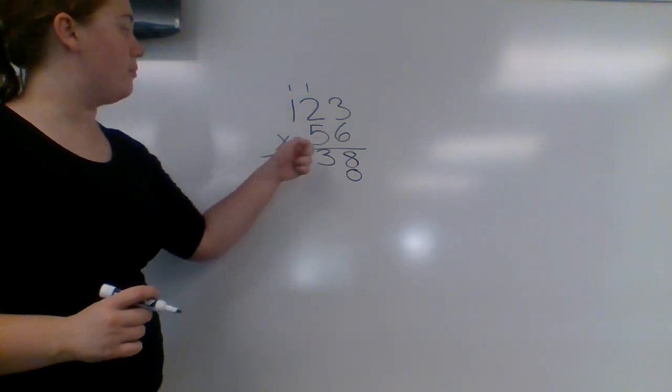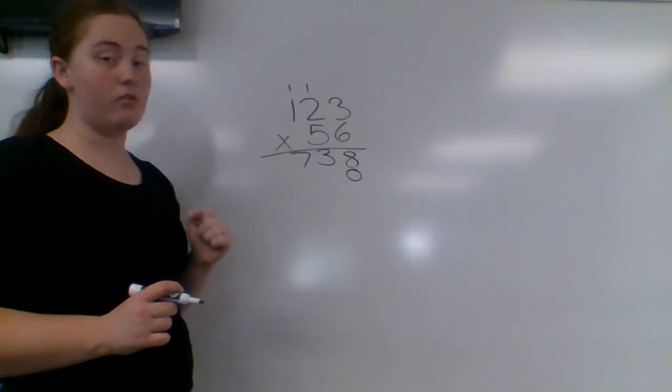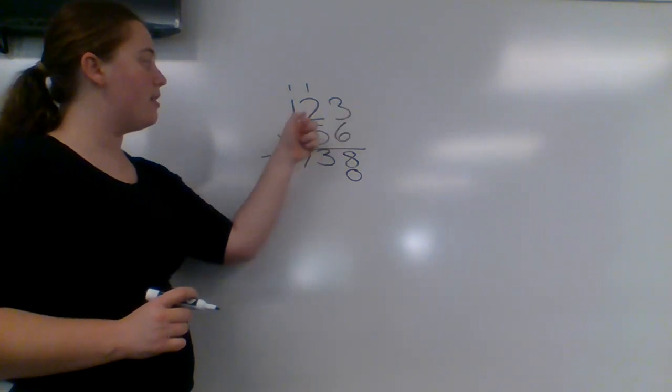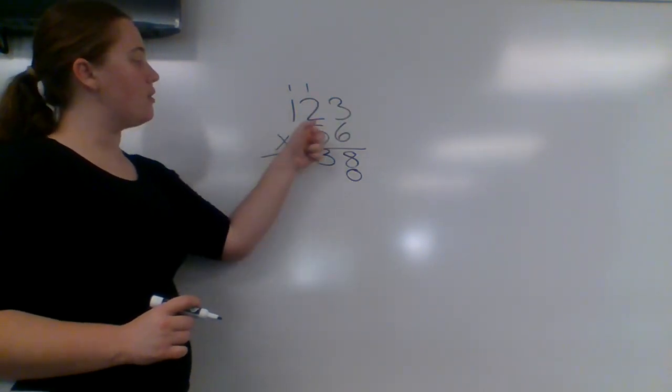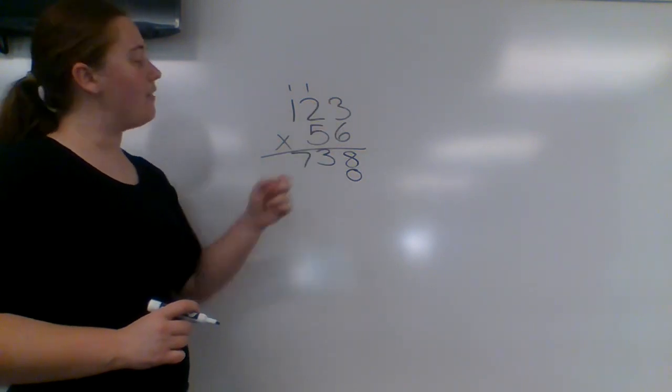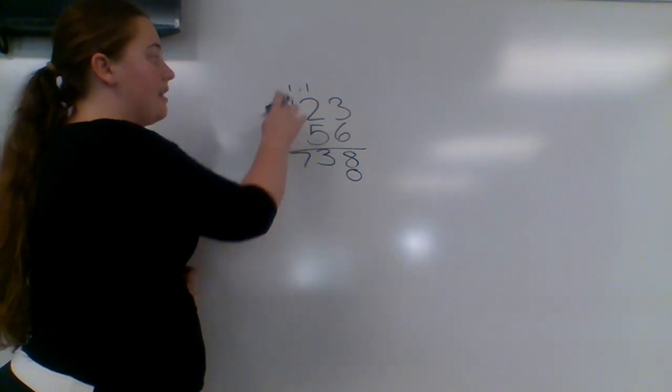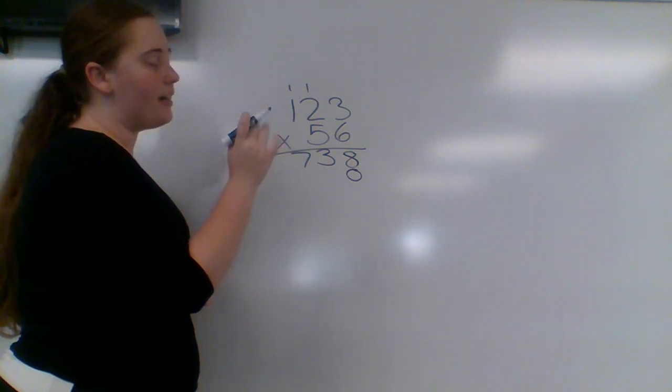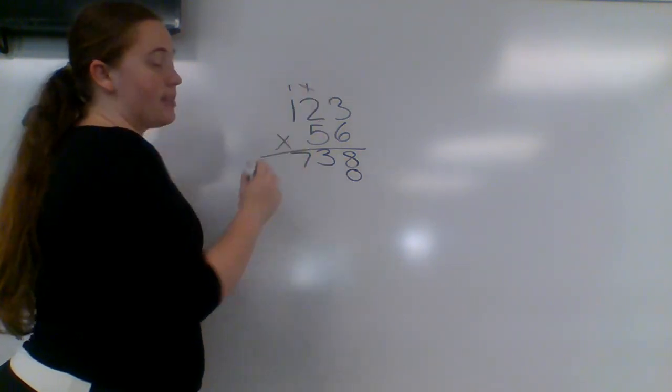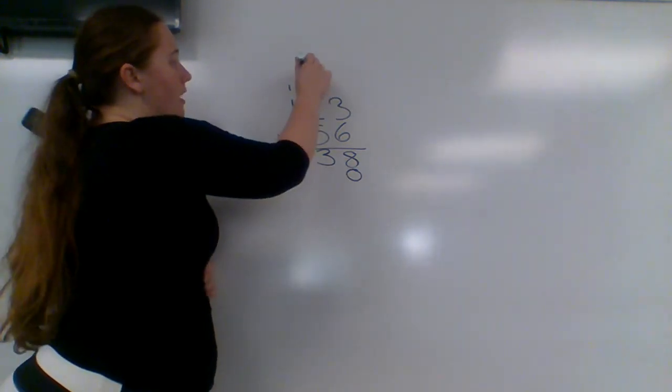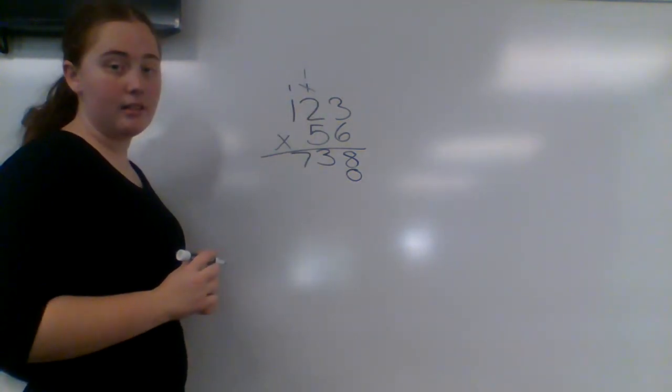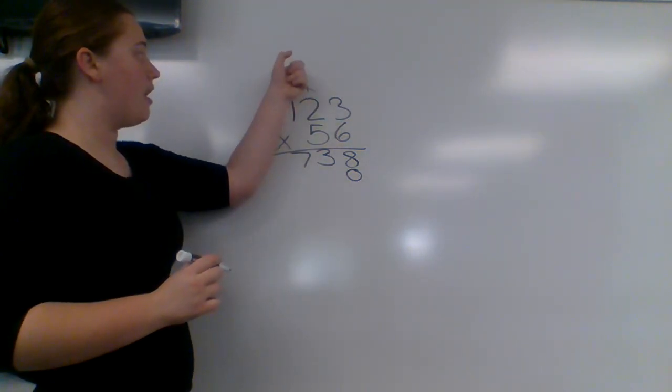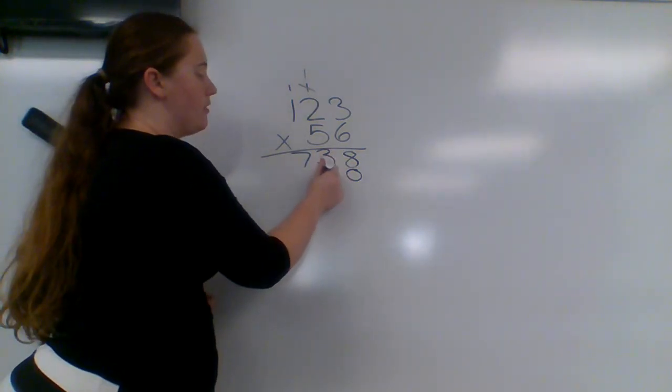And now we're going to multiply this 5 times 123, so we're going to do 5 times 3, 5 times 2, and 5 times 1. So first of all, let's do 5 times 3. 5 times 3 is 15. Now there's already one up there. I don't want to get confused, though. Cross out that 1. Write another 1 above it. So 5 times 3 is 15. Carry that 1. 5 goes down here.